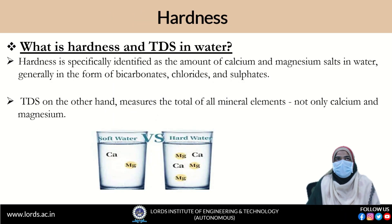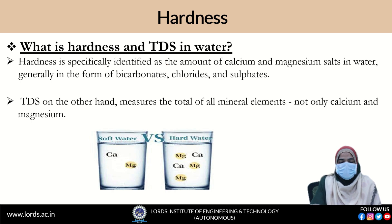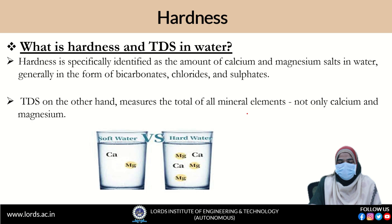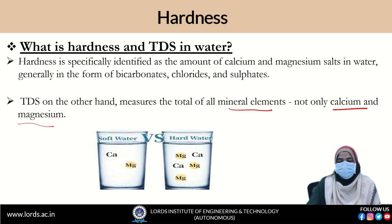Coming towards hardness. Hardness is specially defined as the amount of calcium and magnesium salts present in water, generally in the form of bicarbonate, chloride, and sulfate. Coming towards TDS — total dissolved solids — it measures the total amount of mineral elements, not only calcium and magnesium but some other salts also.